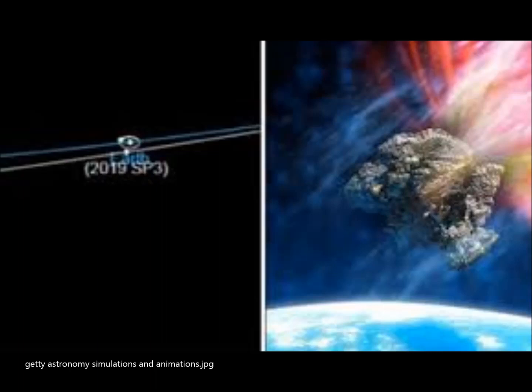An asteroid roughly as wide as Buckingham Palace is tall will come nail-bitingly close to planet Earth in the next 24 hours, according to NASA. Gerard Conga of Express UK reports.